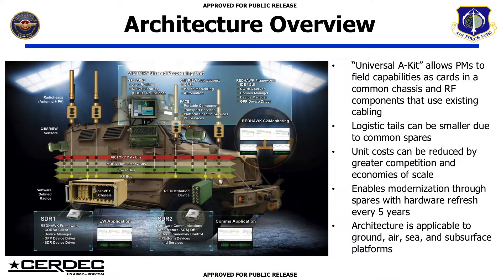Looking at a high-level architecture, you can see a vehicle here. The picture's showing the radio heads on top, which are antennas and power amplifiers. Then you've got the Victory Bus and other buses interconnecting them to allow the resources to be shared. As was mentioned by Mike, there are universal A-kits on the platforms to allow them to be integrated. This will help with making logistical tails smaller because the spares will be common. Unit costs can be reduced because the volumes are higher on each thing being purchased. It'll enable modernization refreshes more easily — mentioned every five years. This architecture can be applied to ground vehicles, air, sea, and subsurface platforms.